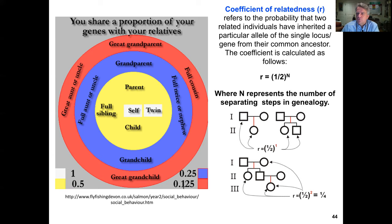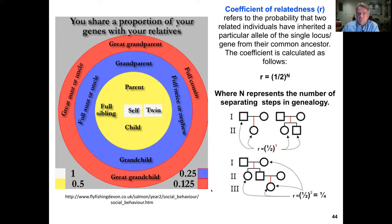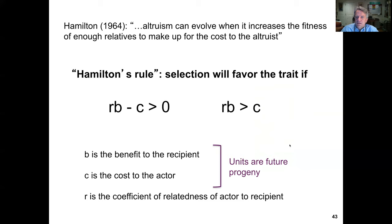JBS Haldane — who also quipped about the creator's non-inordinate fondness for beetles — supposedly stated in a pub in England in 1955, quoted by John Maynard Smith: 'I would lay down my life for two brothers, four nephews, or eight cousins.' The number of individuals for whom he would sacrifice himself is related to the coefficient of relatedness, going right back to Hamilton's rule — the cost of altruistic behavior must be less than the benefit multiplied by the coefficient of relatedness to the recipient.